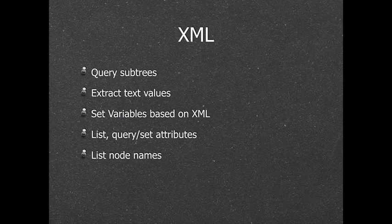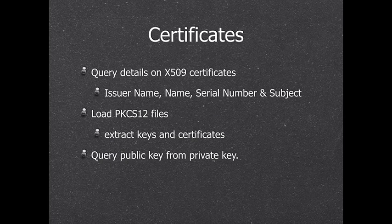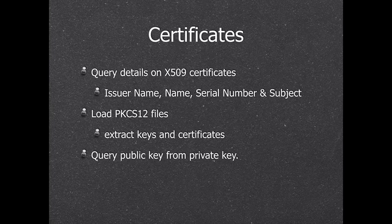We have XML functions for querying sub-trees — you can navigate node by node and get the result as XML, get the text of an XML node, create variables on the fly for all values in XML from a web service, and query attributes and available nodes. We can also work with certificates for secure SSL connections, use the plugin to get the name from a certificate, or use PKCS12 files to get the private key and certificates.